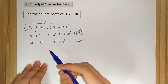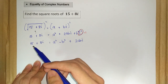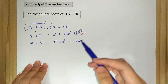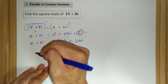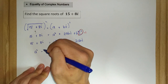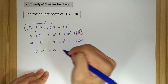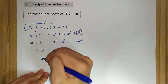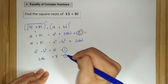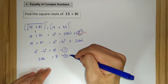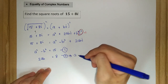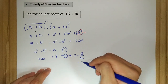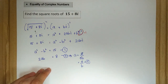Now we can equate the real parts: the real part of the left side is 15, and the real part of the right side is a squared minus b squared. So our first equation is a squared minus b squared is equal to 15. For the imaginary parts, 8 is equal to 2ab, so our second equation is 2ab is equal to 8. From this, a is equal to 8 over 2b, which simplifies to a is equal to 4 over b. Let's call this our third equation.